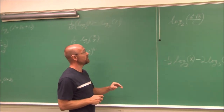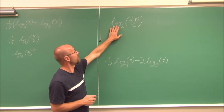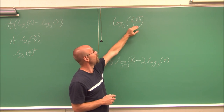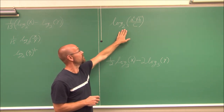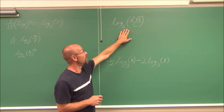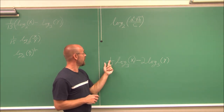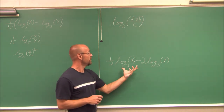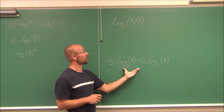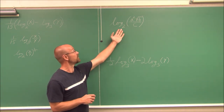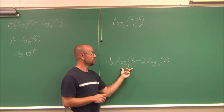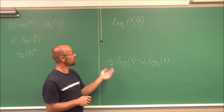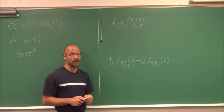Here are two practice problems for you to try. First, expand log base 2 of the quantity a squared times the square root of b all over c as a sum, difference, and multiples of logs. Second, write one-half log base 3 of x minus 2 log base 3 of y as a single logarithm. This has been section 8.5. Thank you for watching.